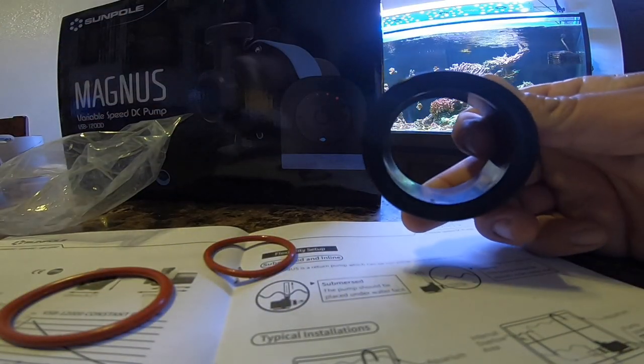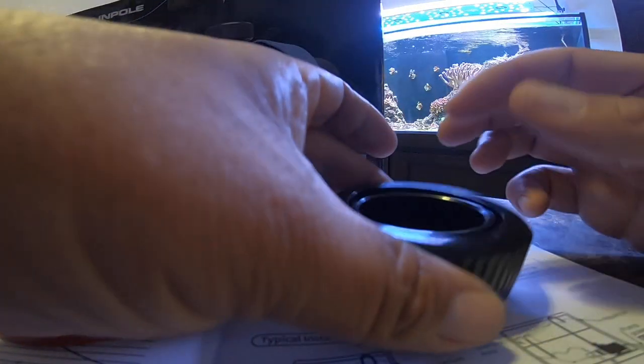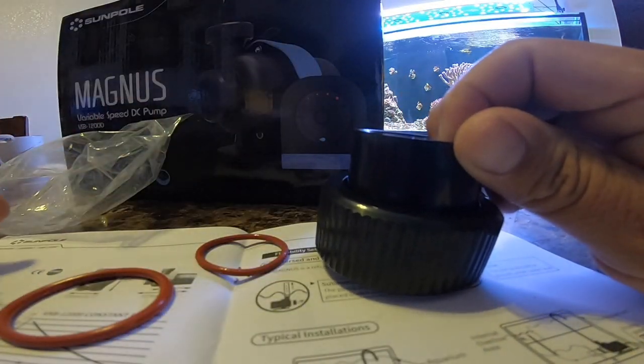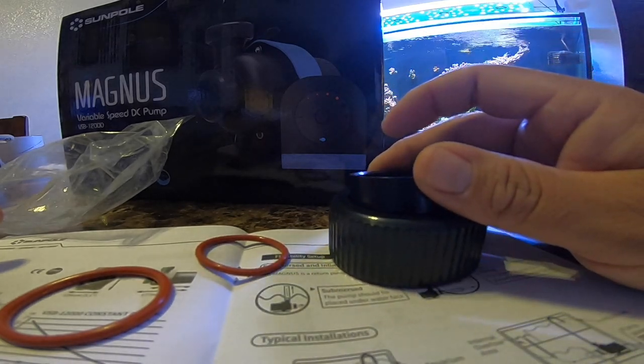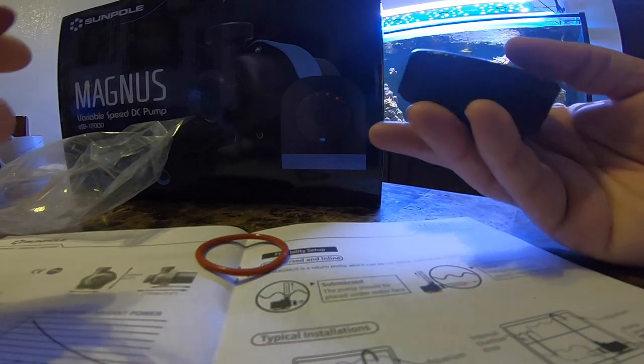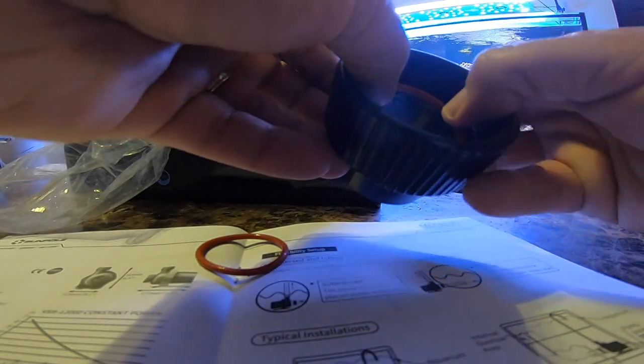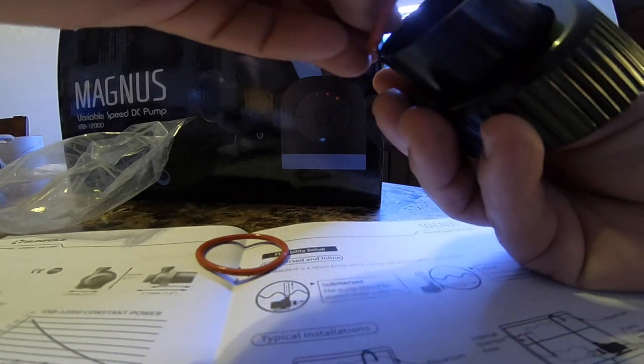Now this pump right here has 6 selectable speeds. And what I really liked about the return pump is that it had a feed mode. Now I'm going to show you that feed mode on the controller.